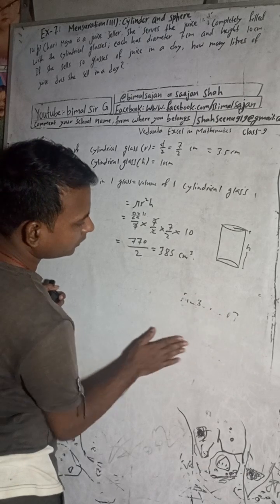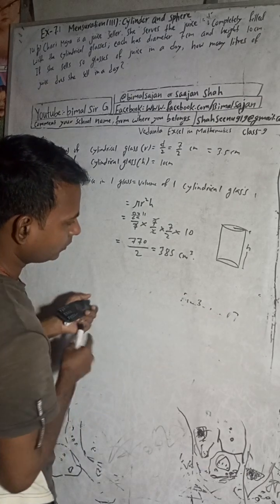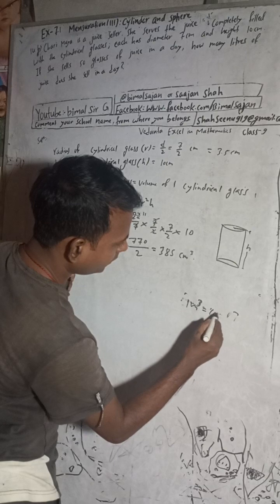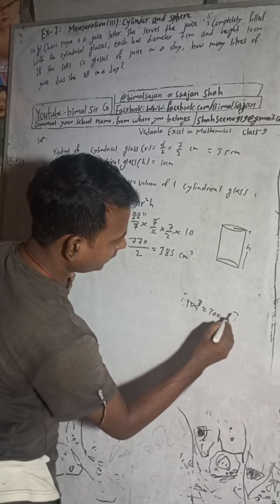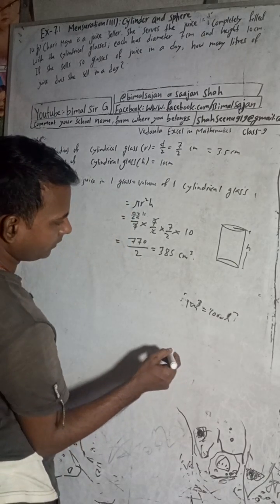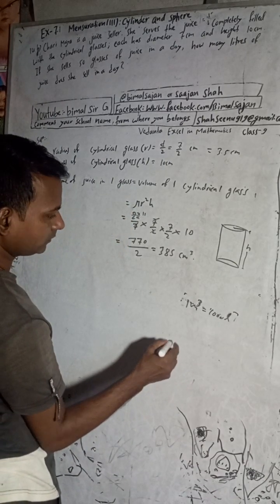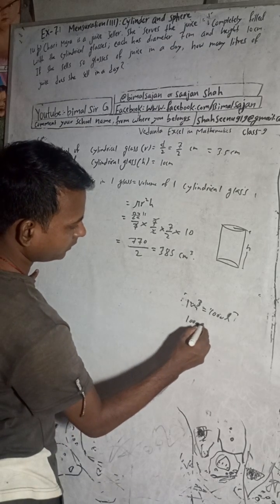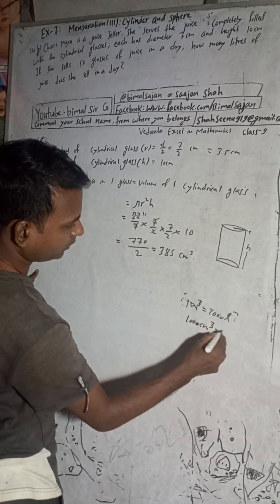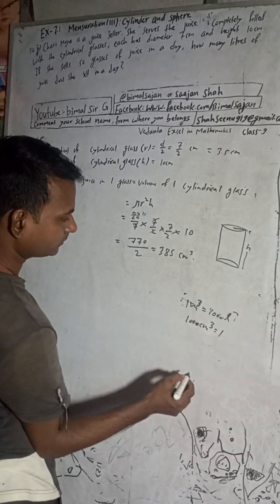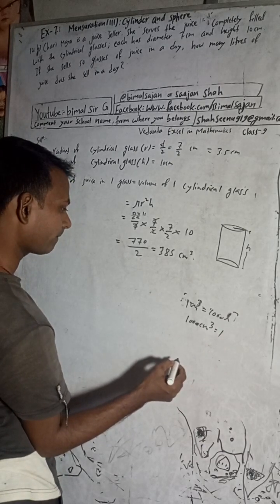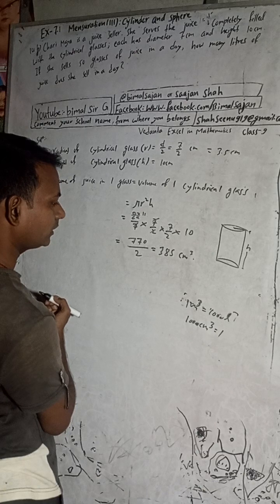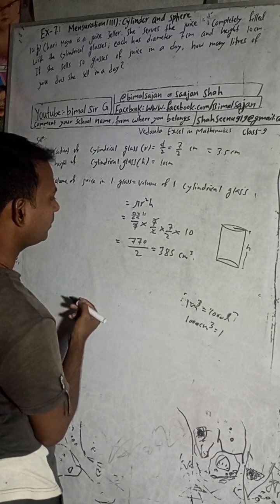We know the conversion formula: 1 meter cube equals 1000 liters, and 1000 cm cube is equal to 1 liter.